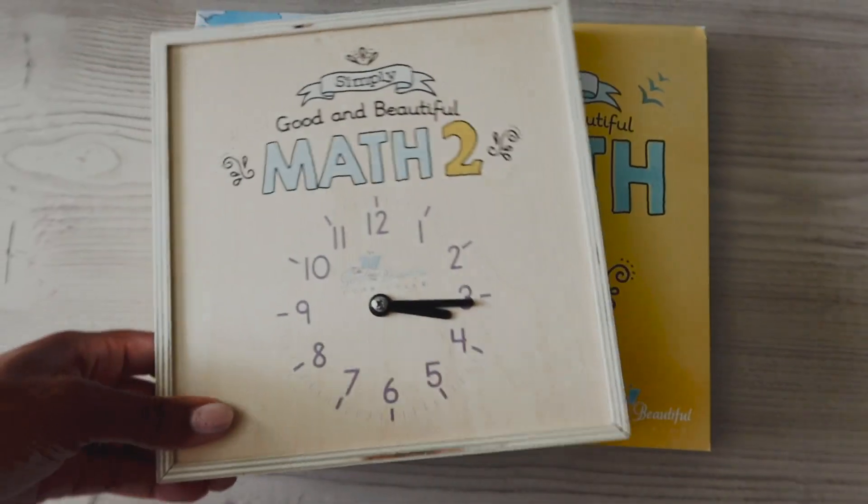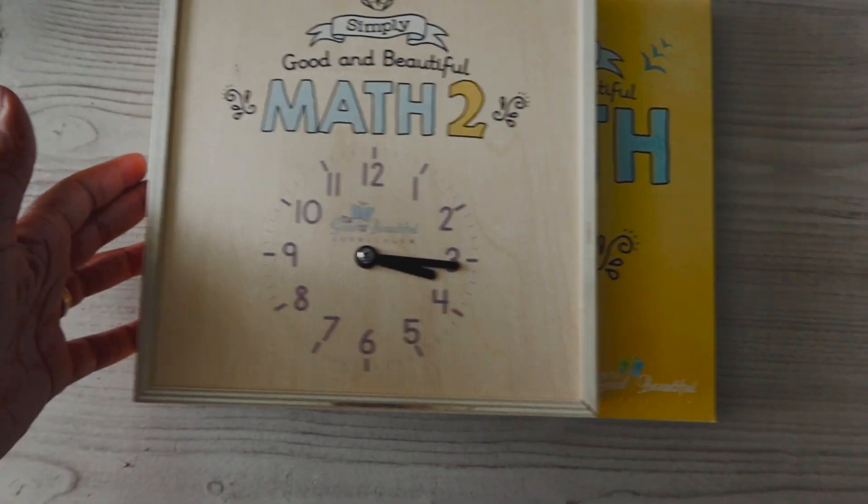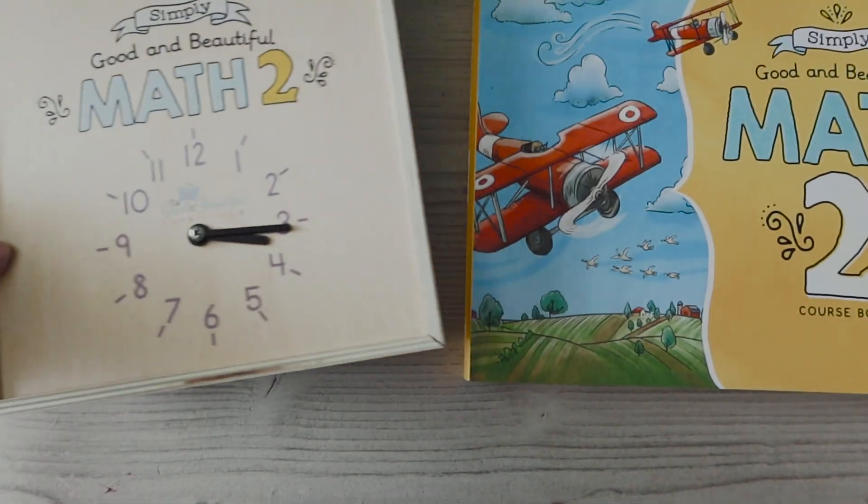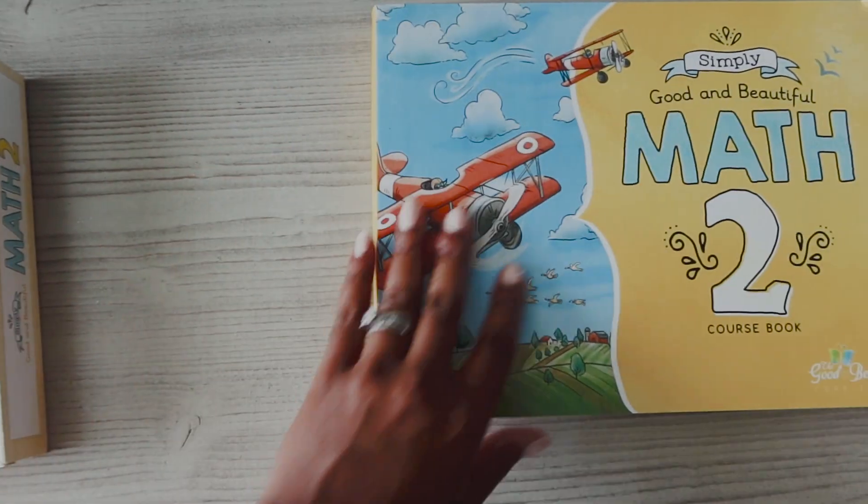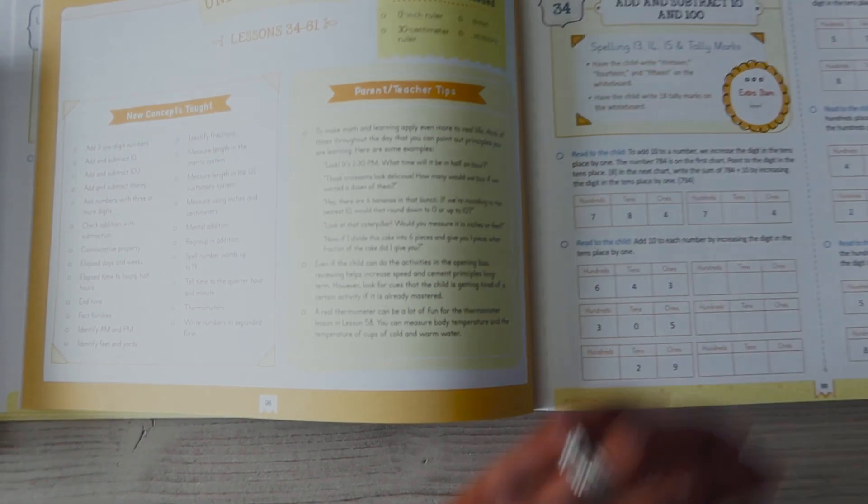It comes with the manipulatives in this box right here. The last time I used the Good and the Beautiful Math, it was spiral bound. Now it is not. You can open it up and lay it flat and I love it just like that.